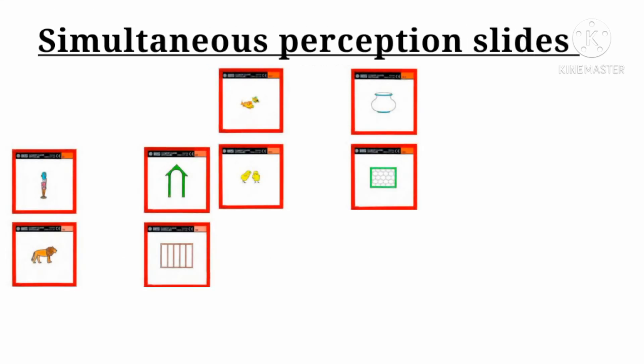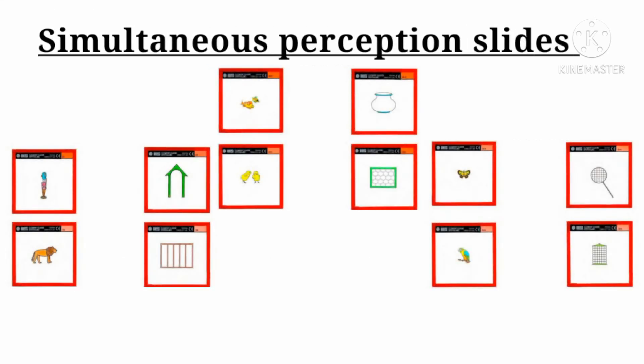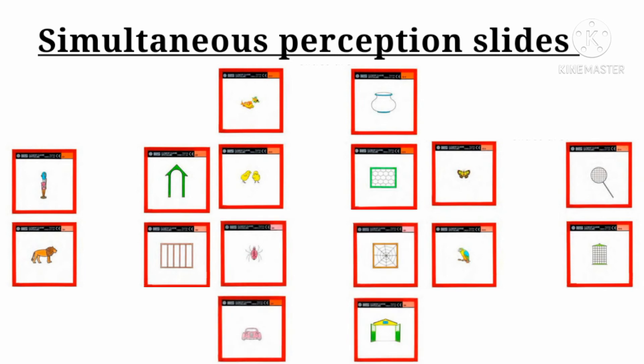So these are some of the simultaneous perception slides. In simultaneous perception slides, the unique thing is that in each pair of slides there are two different images, like one lion in one slide and cage in the other slide.